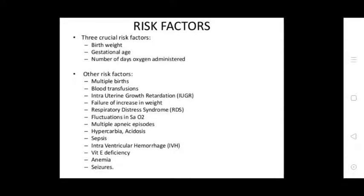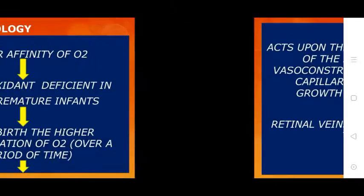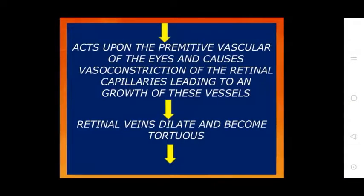Pathophysiology of ROP: there is a greater affinity of O2 and vitamin E deficiency in premature infants. After birth, the higher concentration of O2 over a period of time acts upon the primitive vasculature of the eyes and causes vasoconstriction.